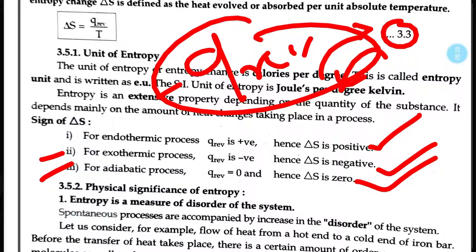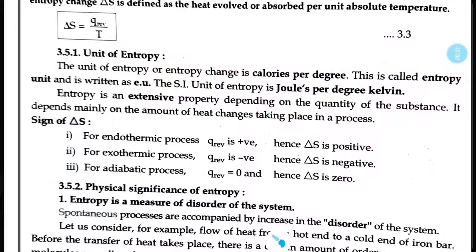So, entropy is a state function that depends upon the initial and final state. For an endothermic process delta S is positive, for an exothermic process delta S is negative, and for an adiabatic process delta S is zero — since there is no change in heat.